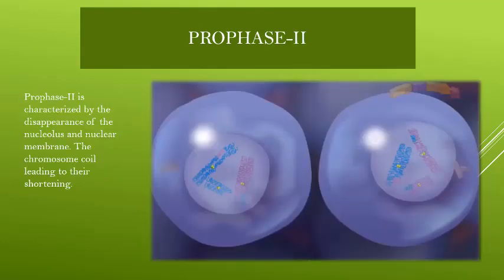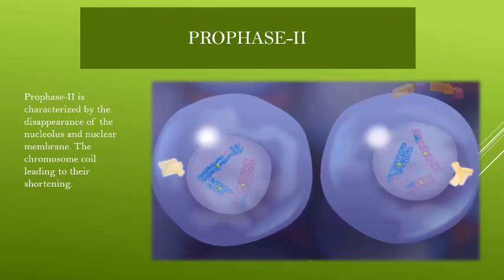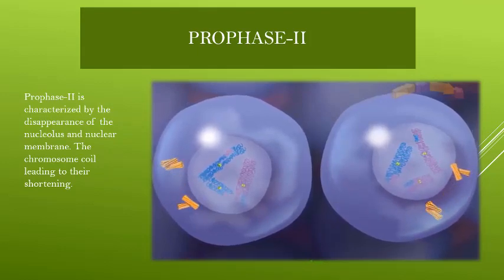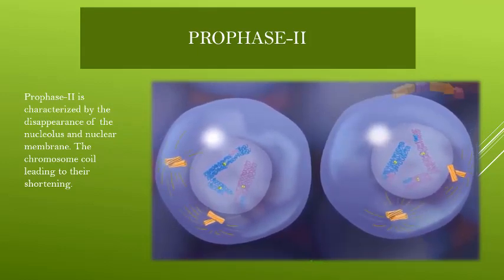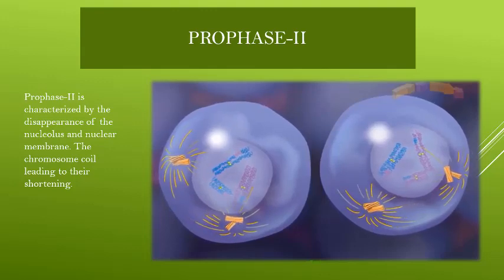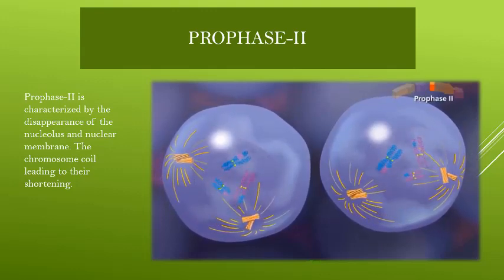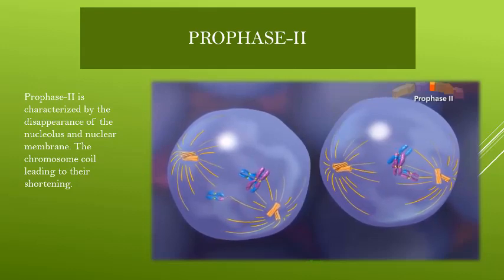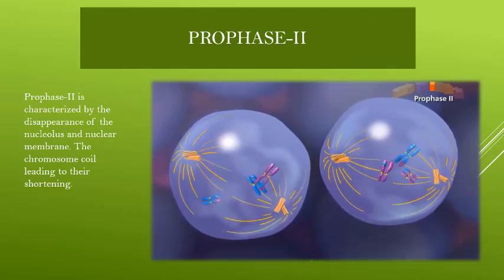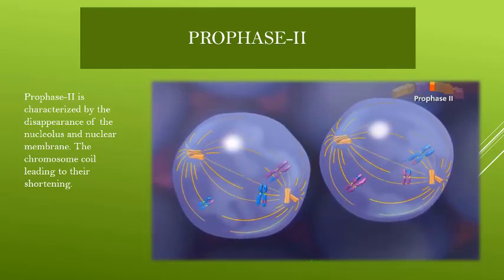In Prophase II, the nucleolus and nuclear membrane will disappear, and the chromosomes will start thickening and shortening, becoming visible again.